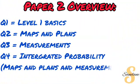Moving to Paper 2, we're again looking at the overview of its layout. Question 1 has Level 1 basic questions — numbers, calculation of numbers, and patterns. Question 2 deals with Maps and Plans. Question 3 covers Measurements. Question 4, just like in Paper 1, is an integrated Probability question, but this time mixed with the Paper 2 topics of Maps and Plans as well as Measurements.